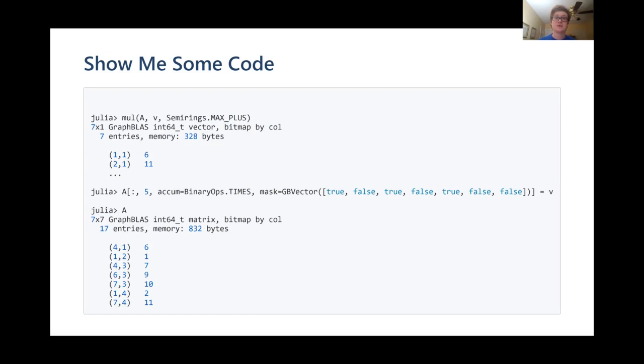Next we have matrix vector multiplication using the built-in max plus semi-ring. A large number of semi-rings are built in, the tropical semi-rings, boolean semi-rings, and these built-ins are fast. User-defined operators are well supported, but experience significant slowdowns relative to those built-in operators.